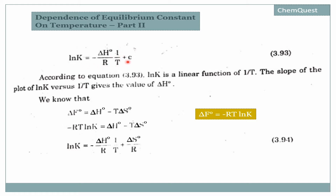Linear relationship means that as one quantity decreases, the other also decreases, or as one quantity increases, the other also increases. So ln K and 1/T have a linear relationship with one another. This is actually an equation of a straight line, and in the next slide I will show you the slope of this graph. If we plot ln K against 1/T, we get a straight line, and from its slope we can find the value of ΔH°.